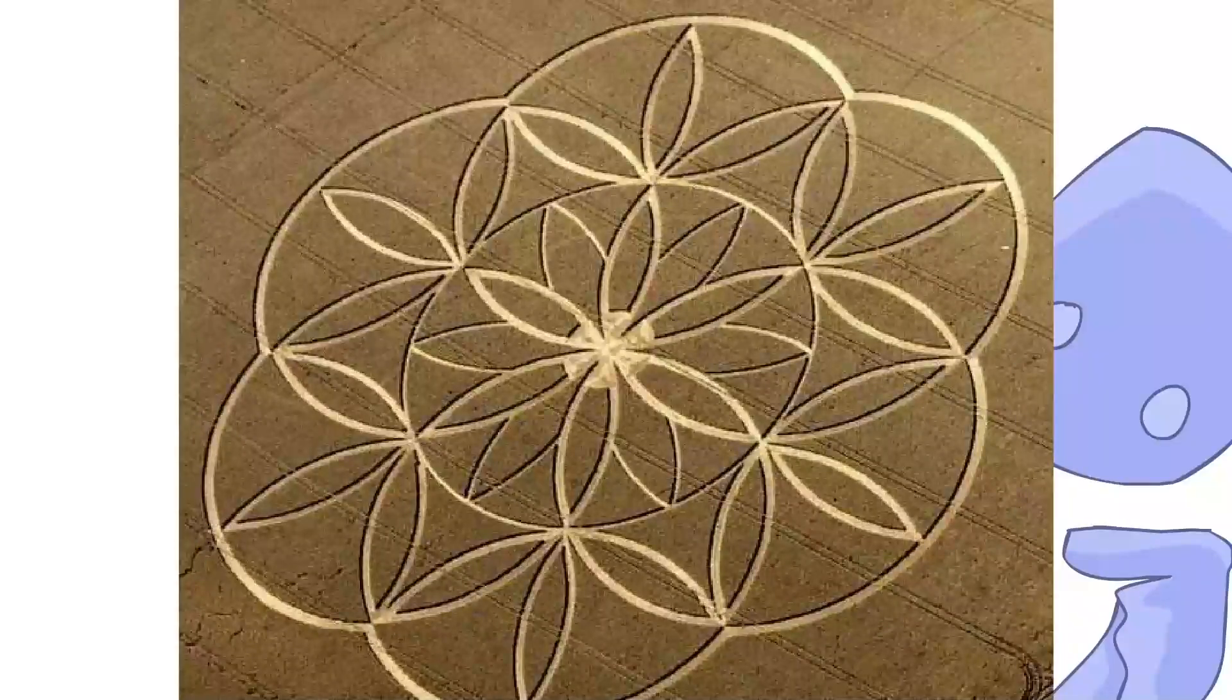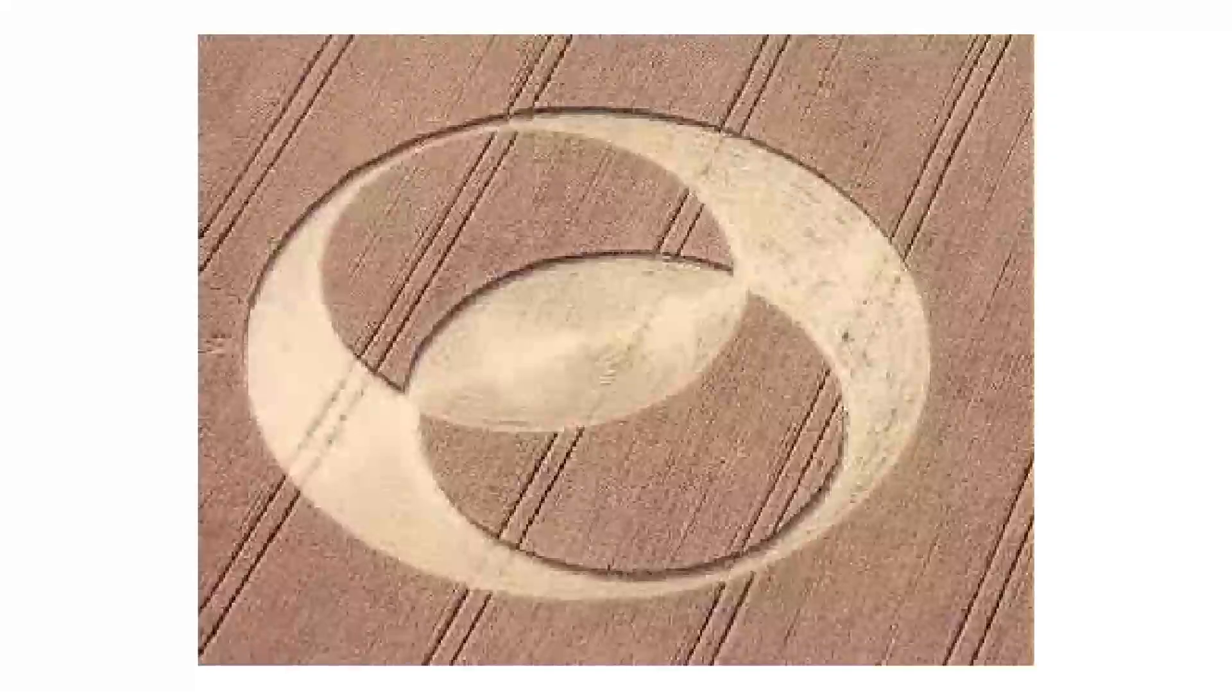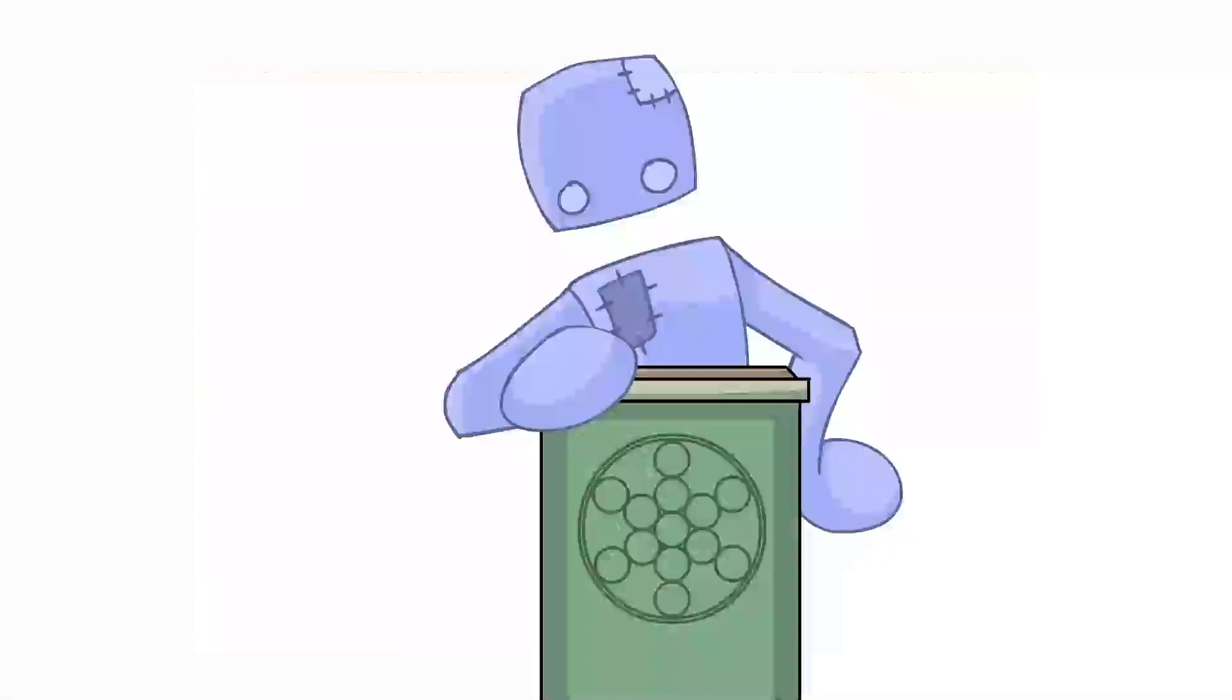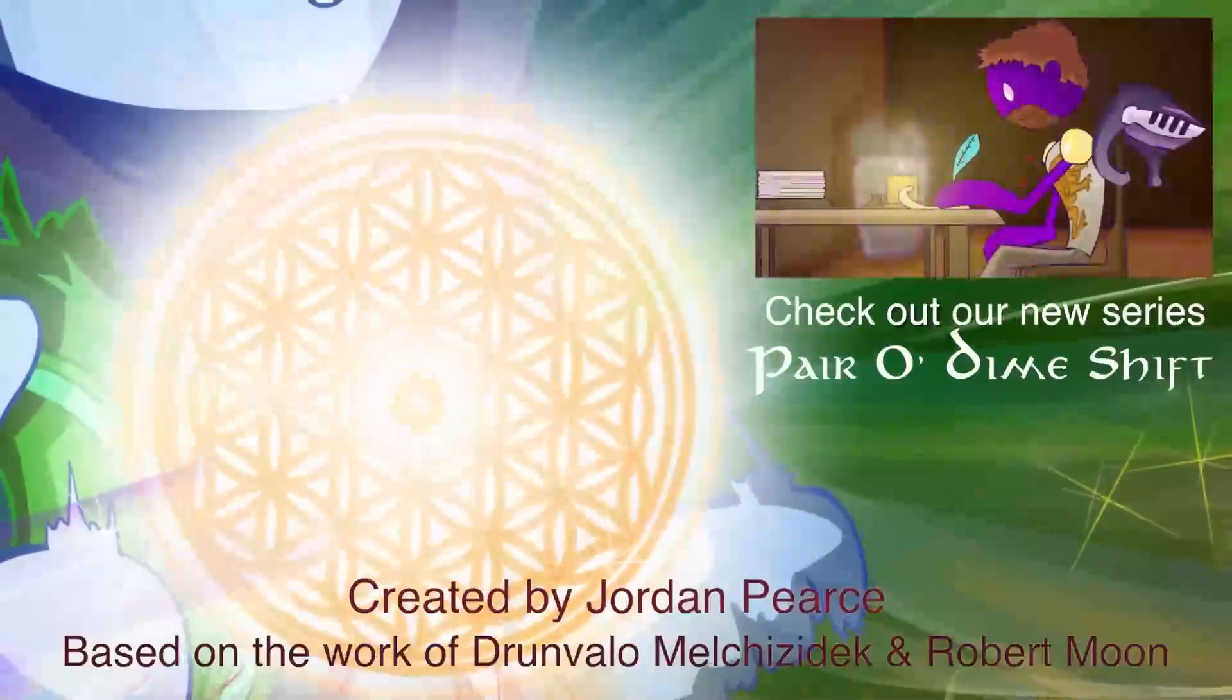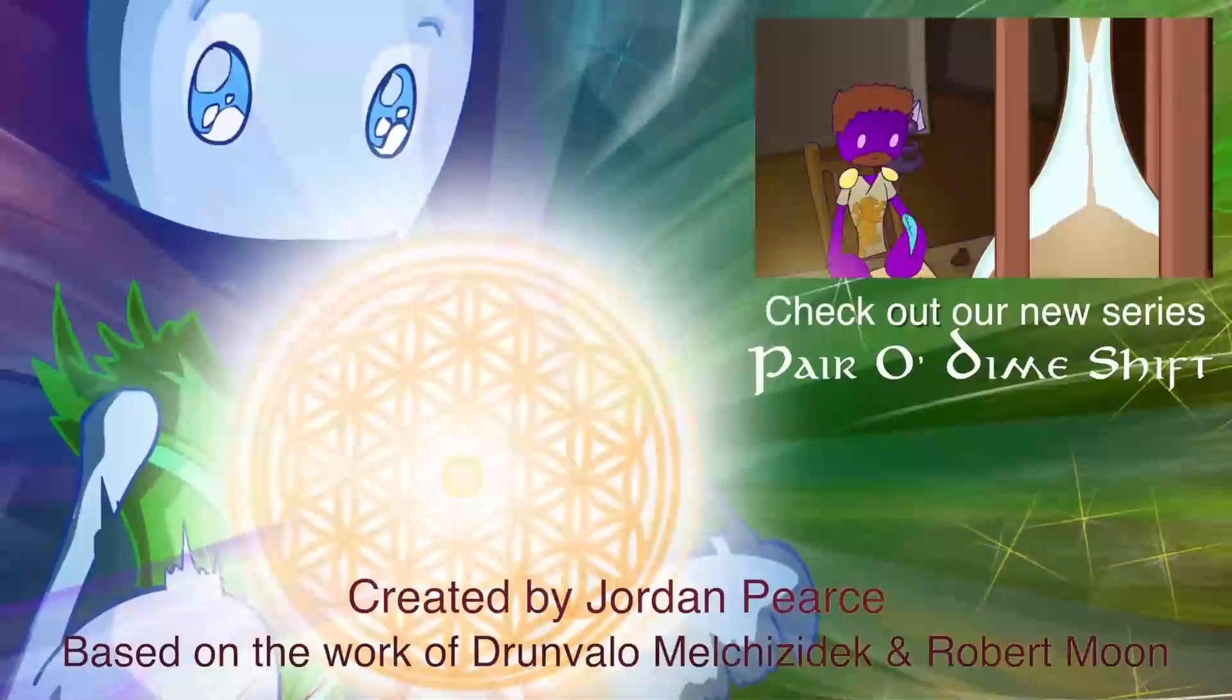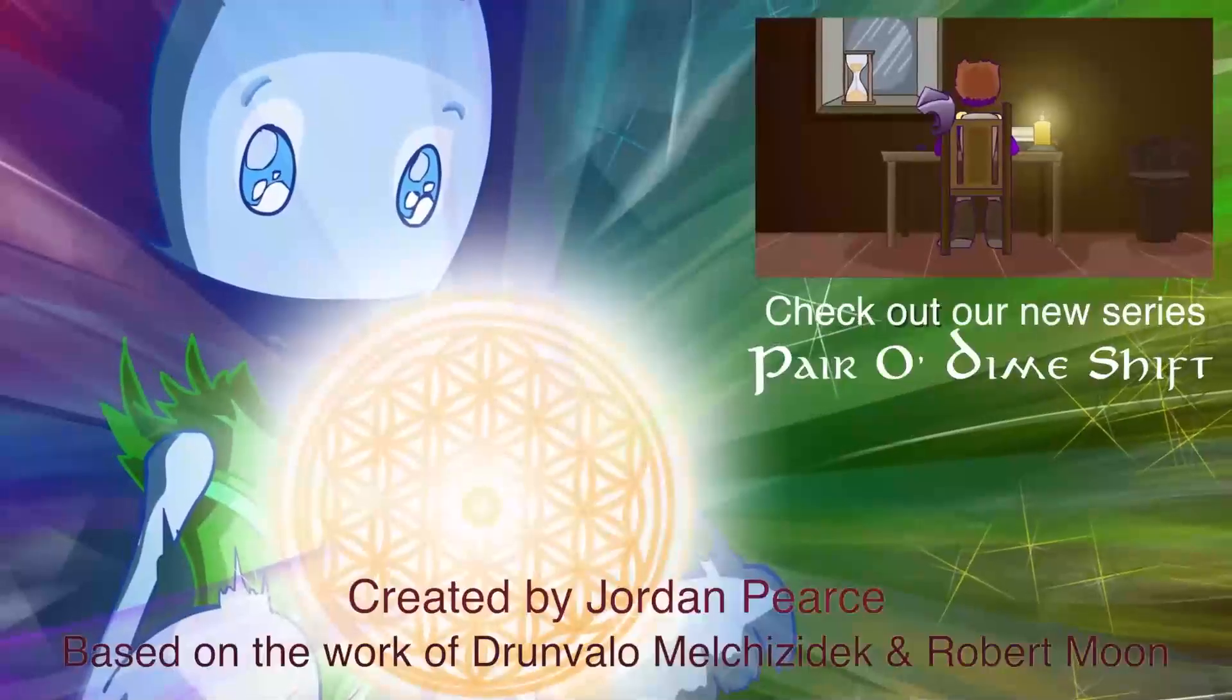This is the flower of life in a crop circle. Remember, the flower of life is not only tied to everything in the universe, but consciousness, spirit as well. Here's another one, and another one. Here's the Vesica Pisces in a crop circle. See, by creating these crop circles, aliens have been actually affecting and helping the consciousness of the planet. Do not fear aliens. They're here to help.